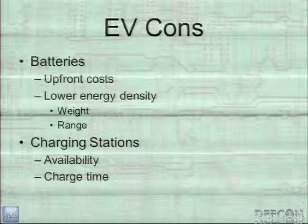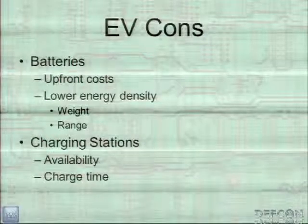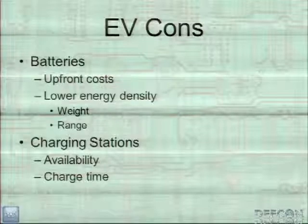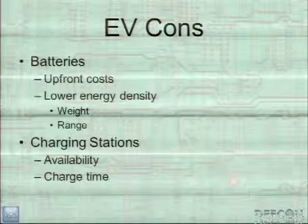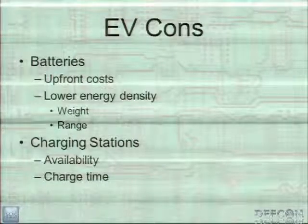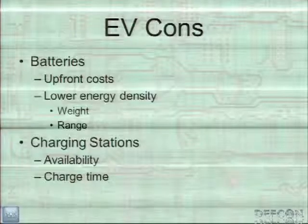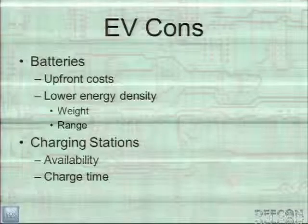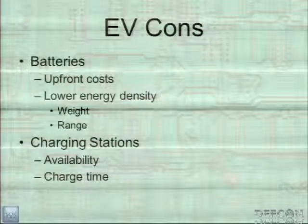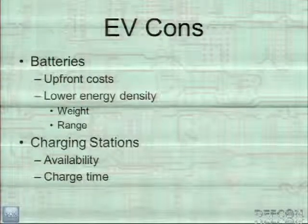The cons are batteries — very expensive upfront, though newer batteries lasting up to 10 years offset that cost. Compared to gas, energy density is lower, so range is lower. Charging stations are an issue; availability can be a problem, and political issues sometimes cause problems — in one workplace, people complained that two EV drivers were getting 20 cents of free electricity a day, so they turned the chargers off. Charge time: batteries aren't really the limitation — you could fill a battery as fast as a gas tank — but unless you have massive power available, that's not achievable.